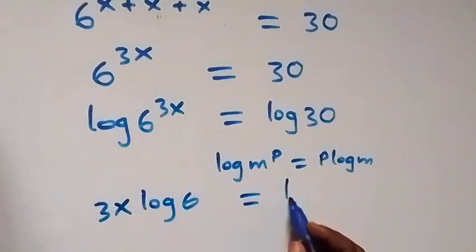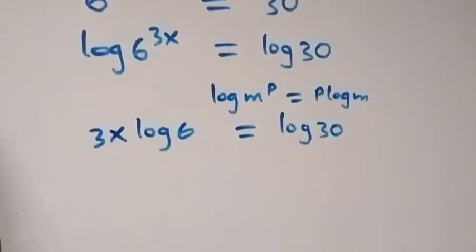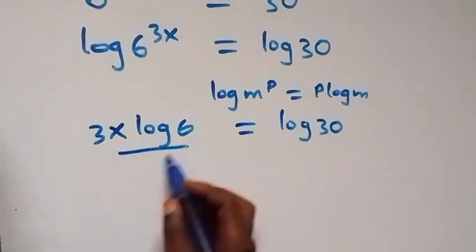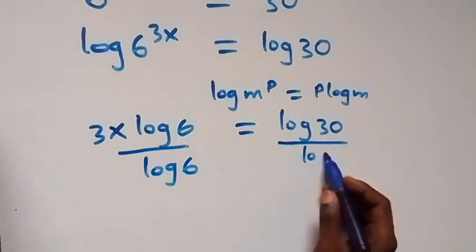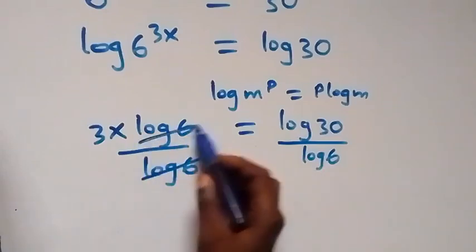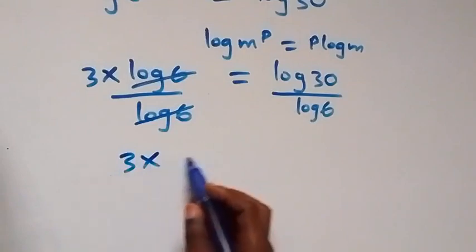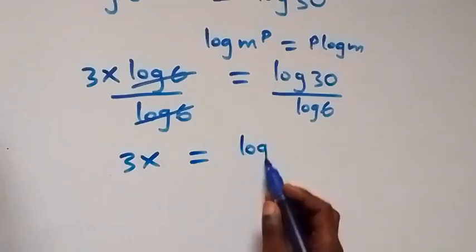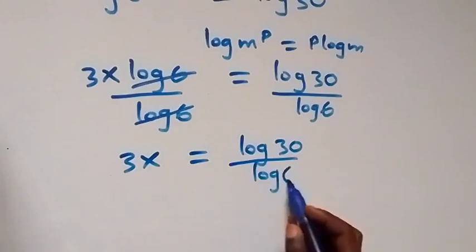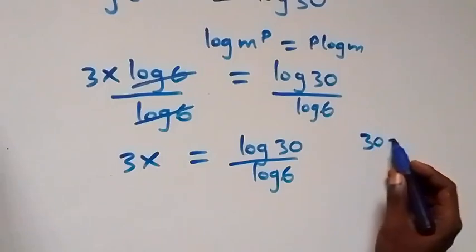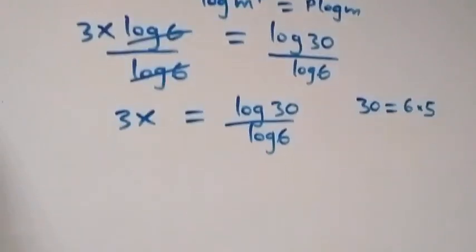That equals log 30. The next step is to divide both sides by log 6. Dividing here by log 6 and also here by log 6, the log 6 cancels, and we have 3x equals log 30 divided by log 6.